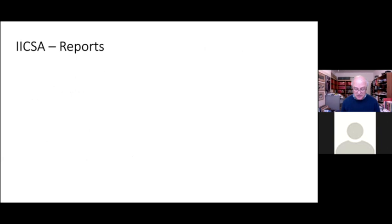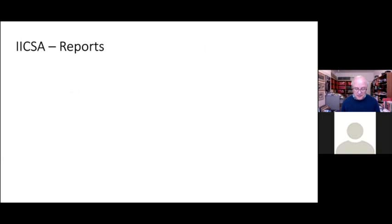Listen to these words from ICSA. Its actions and decisions made it easy for the sexual abuse of children to occur in four principal ways. It knowingly retained those who posed a risk to children. It failed to investigate when they suspected child sexual abuse. It exposed children to situations where they were at risk, and it allowed adults suspected of sexual abuse to move and sexually offend elsewhere.